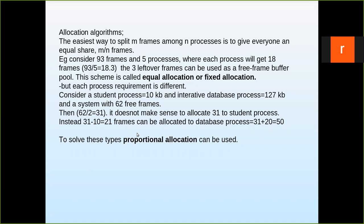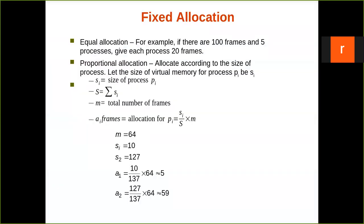To solve this problem, we use proportional allocation. Instead of equal shares, we judge how much each process may need and allocate free frames proportionally based on the size of the logical address space of each process.